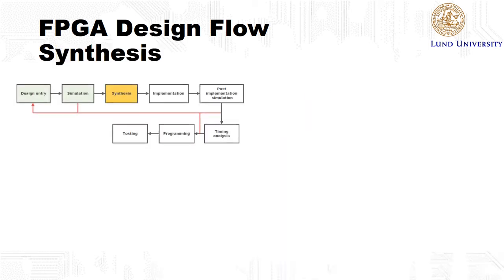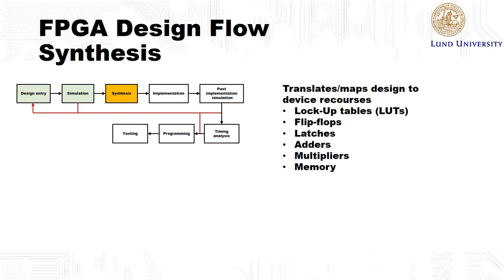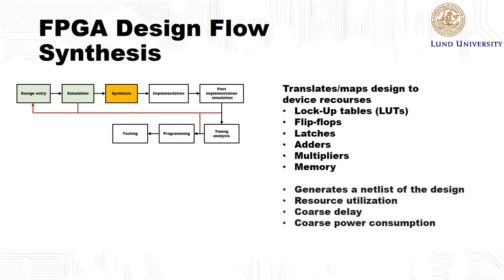During the synthesis step, the electronic design automation tool translates the description of your design to resources available on the target FPGA, creating a low-level implementation. The kinds of resources available vary from FPGA to FPGA, but the most common resources are look-up tables, flip-flops, latches, adders, multiplexers and memory. After this step, a netlist is produced specifying what resources will be used and how they should be connected. You can then see the total number of resources your design requires and if it will fit the targeted FPGA.